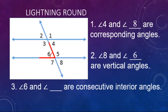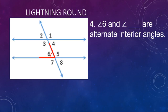Number three: angle six and angle blank are consecutive interior angles. Angle six is interior — angles three, four, five, and six are the interior angles. On the same side of the transversal as six is angle three. Number four: six and blank are alternate interior angles. Angle six is interior, and the alternate angle on the opposite side of the transversal is angle four — it makes a Z-type shape.